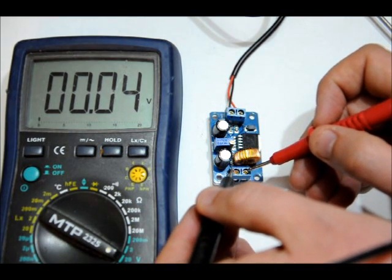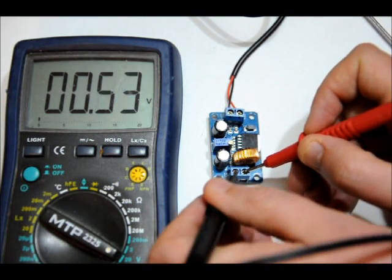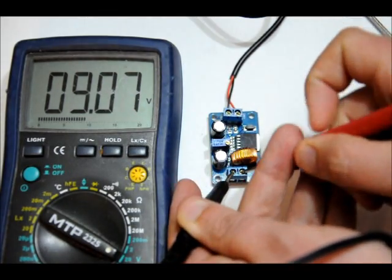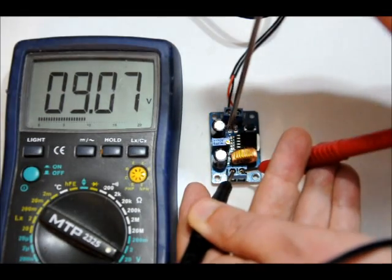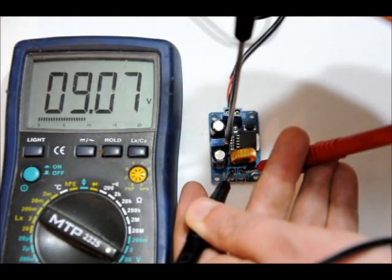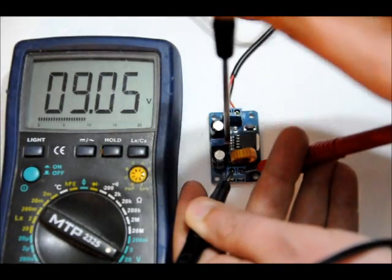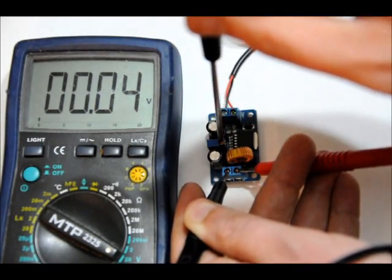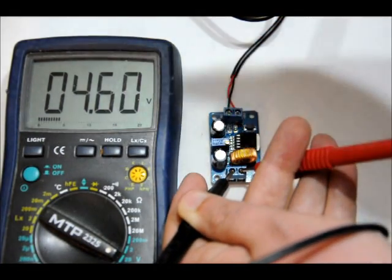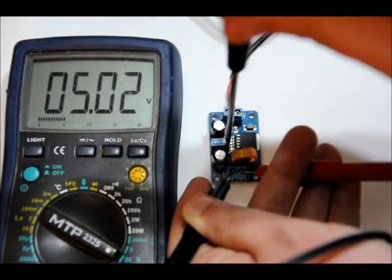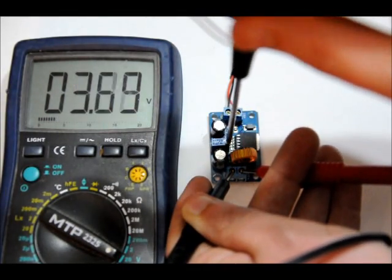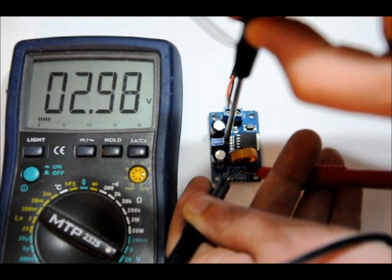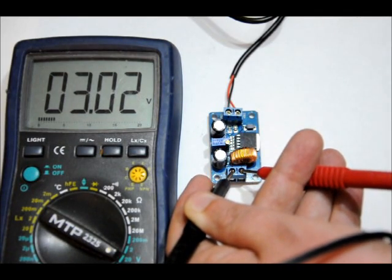So if I measure the out plus and out minus, currently I see just about what we have at the input. So what I'm going to do, and many of the step-down converters out there on eBay, or similar to this, I'm going to take my screwdriver, and I'm going to calibrate the output down to 3 volts. It's quite easy. That's good. 3.02 volts.